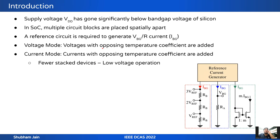The supply voltage of modern SOCs has gone significantly below the bandgap voltage of silicon, which is 1.25 volts, making traditional bandgap voltage references no longer useful. Also in modern SOCs, circuit blocks are placed spatially apart, and because of IR voltage drop, a reference voltage cannot be transported throughout the chip — a current reference is required instead.